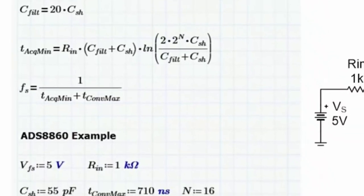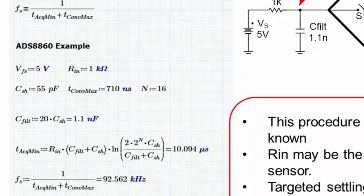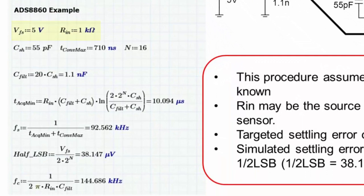The ADS8860 example shows how to calculate the sampling rate with a full-scale input signal and a 1k ohm input impedance. The sample and hold capacitance, conversion period, and resolution are provided from the datasheet. The external filter is selected to be 20 times the sample and hold value, or 1.1 nF in this case. Applying these values to the acquisition period formula yields approximately 10 microseconds.